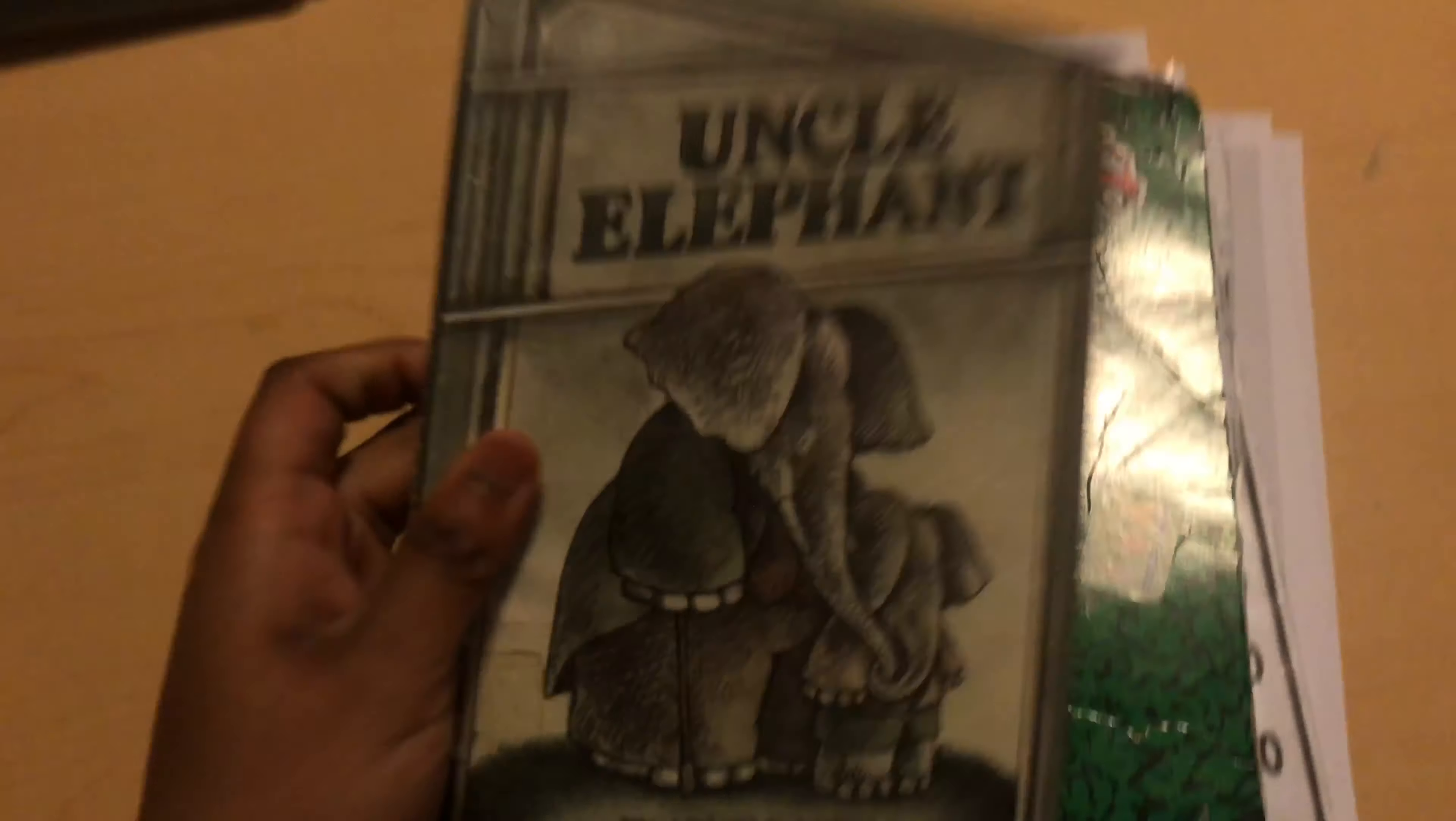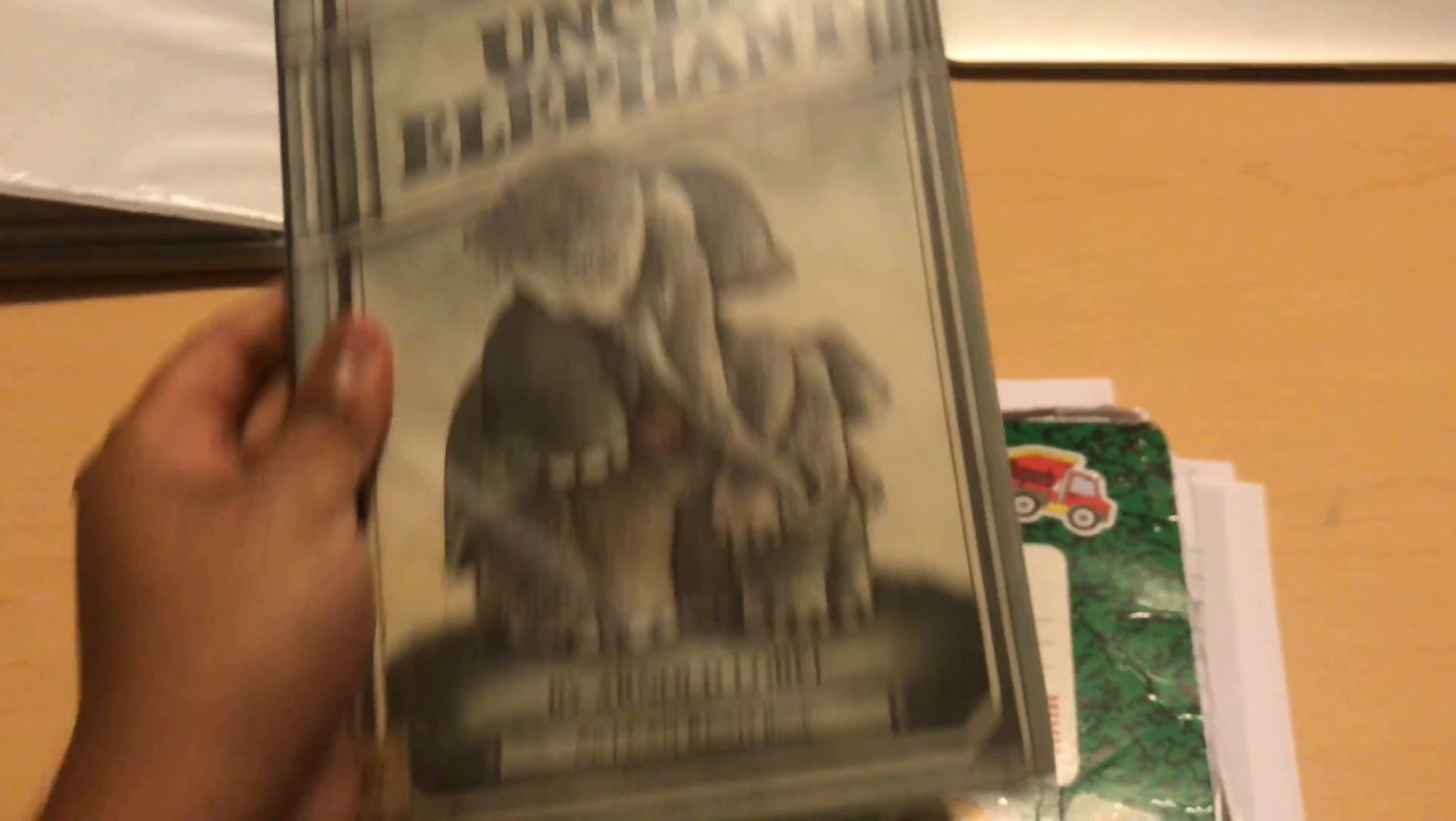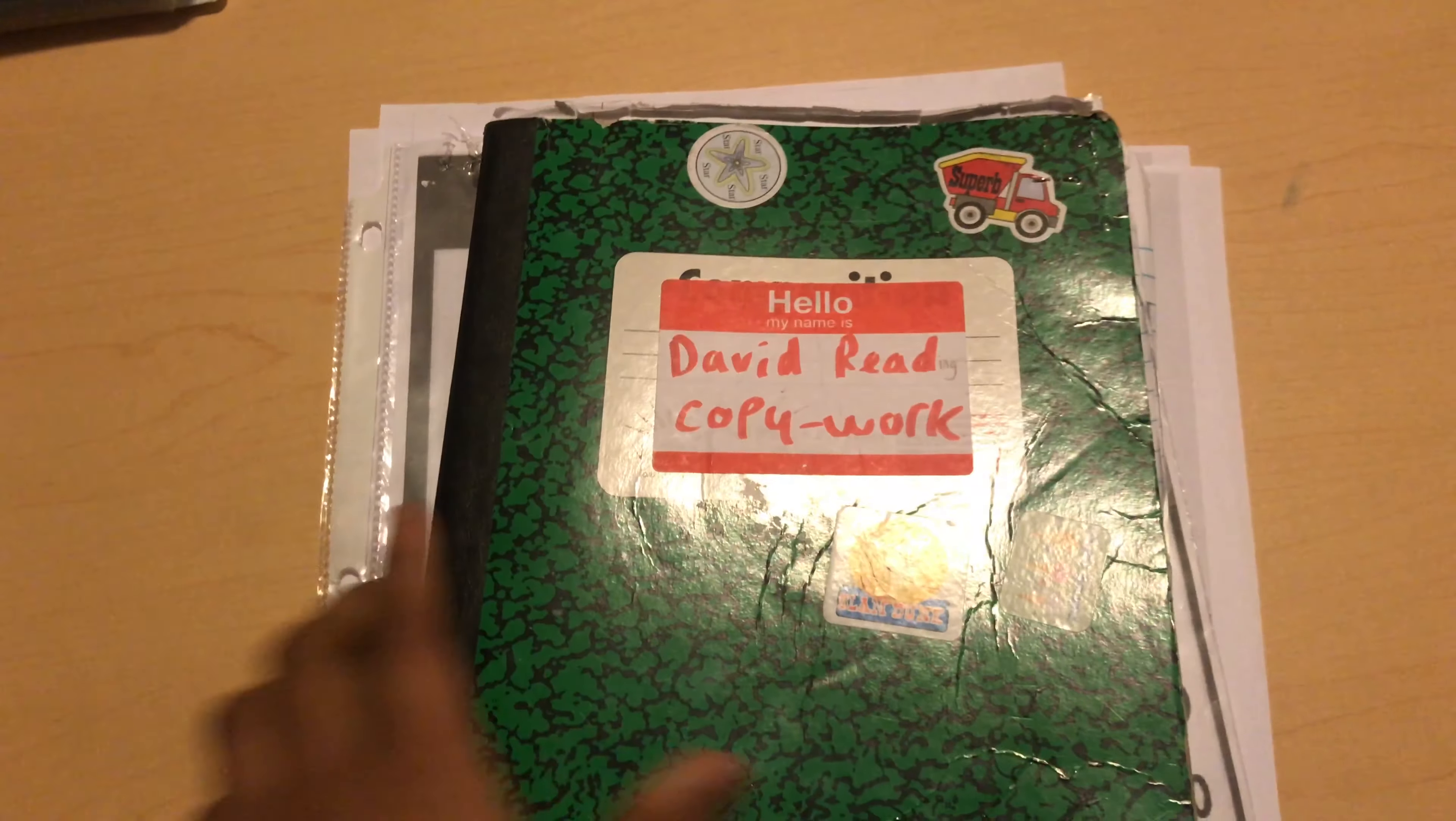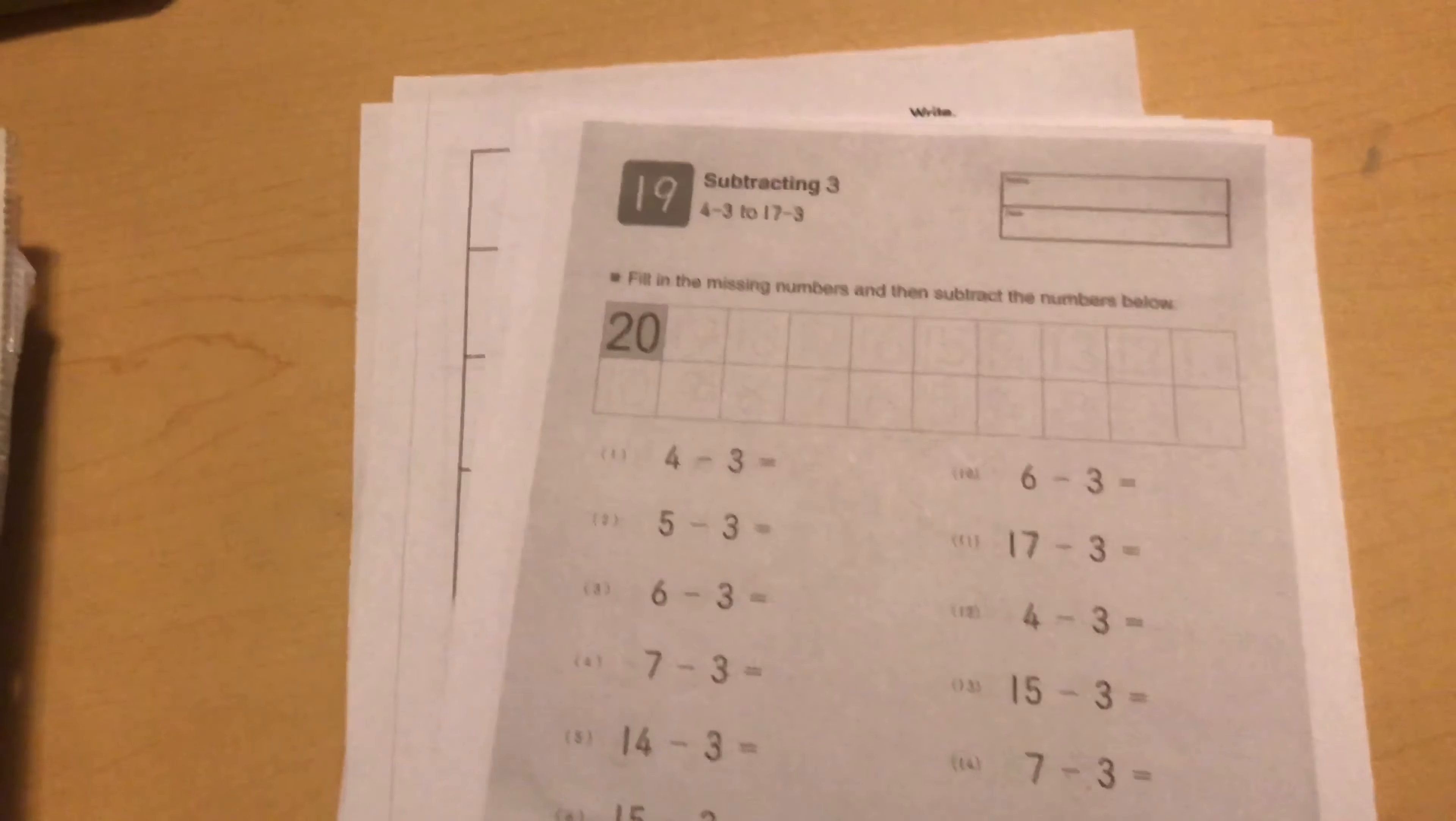Which is worksheet silent E and two, E slash two, and this is the worksheet. And that's pretty much it from Monique for David.